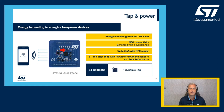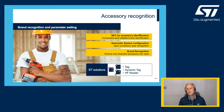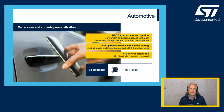Accessory recognition is another popular use of NFC tags. In this example, a reader is embedded into the base of a drill, and tags are embedded in the accessories. This allows you to detect whether an accessory is compatible with the product — for instance, ensuring the drill motor only runs at a certain RPM when used with a specific accessory.